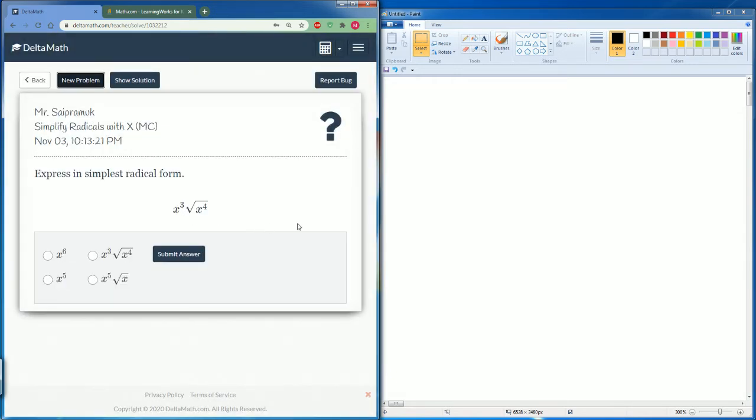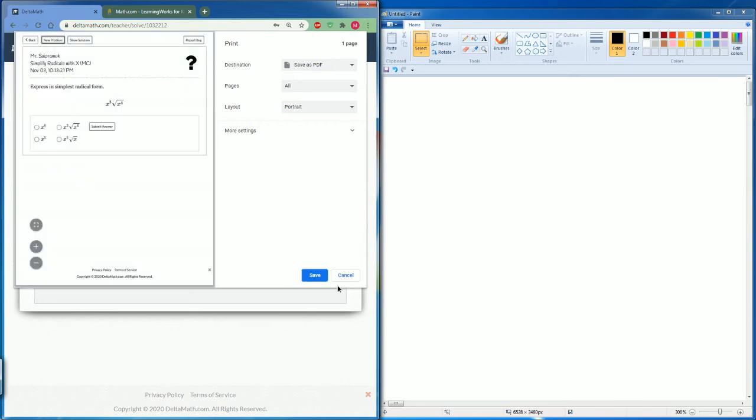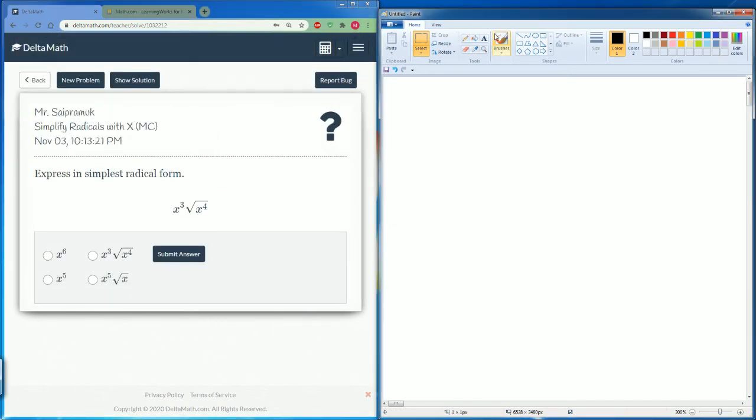Now we see x cubed radical x to the fourth. Nothing happens to the x cubed times. The 4 is going to be divided by 2 because that's what the radical is. The radical means to the one-half power.